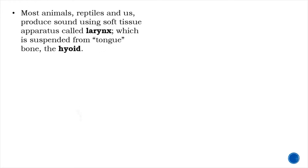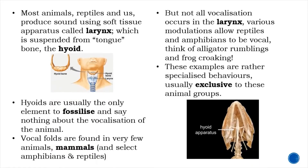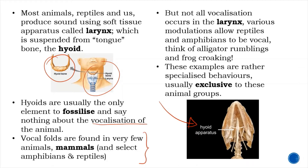Most animals, reptiles, and us produce sound using a soft tissue apparatus called the larynx, which is suspended from the tongue bone or the hyoid, which you can see in the picture here. Hyoids are usually the only element to fossilize because they are cartilaginous but they can ossify, and they say nothing about the vocalization of the animal — you can see how it's preserved in this reptile skull here. Vocal folds are found in very few animals: mammals and some amphibians and reptiles, which I'm going to go over in the next slide.